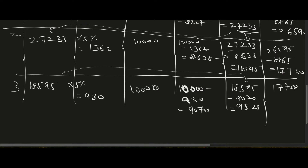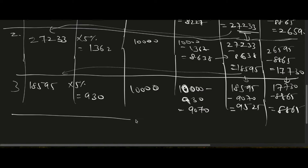The right-of-use asset at end of Year 3 = 17,730 minus 8,865 = 8,865.